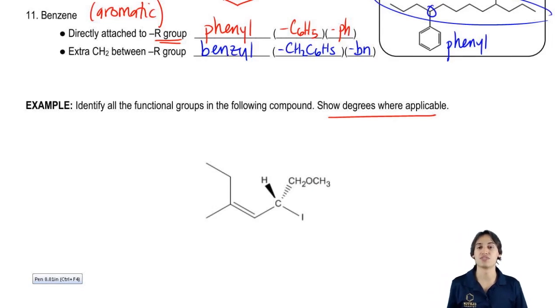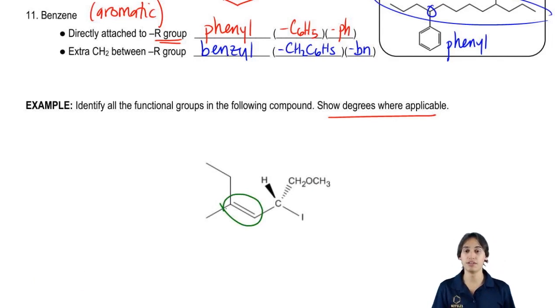So first of all, how many functional groups did you guys find? And the answer was three. Because I had this double bond, I had this oxygen over here and then finally I had that iodine.